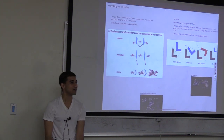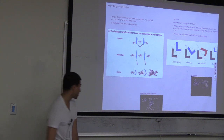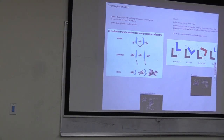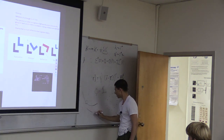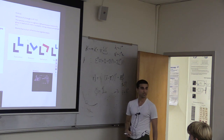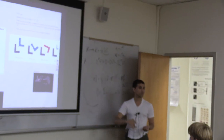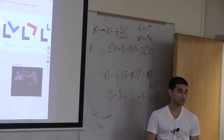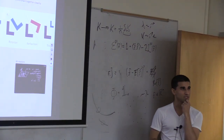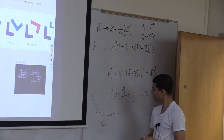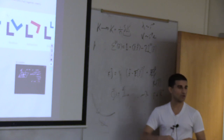Intuition for why a line plus a point at infinity equals a circle: zoom in on a circular arc - the more you zoom, the flatter it looks. More precisely, the curvature of a circle is 1/radius; if the radius is infinite, the curvature is 1/infinity = 0, which is the curvature of a line.